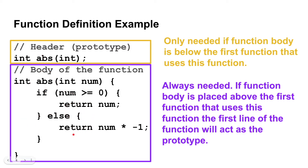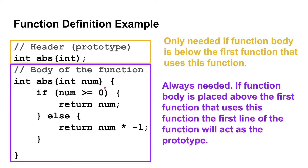We'll look at the return statement more in a later video. You don't necessarily need this function prototype above main as long as you place the function body above the function that is calling it. So if you're calling a function from main and you put the body above main, you don't need a separate header. But if you put the body below main, you would need the header above main so the compiler knows the function is valid when it hits that function call.